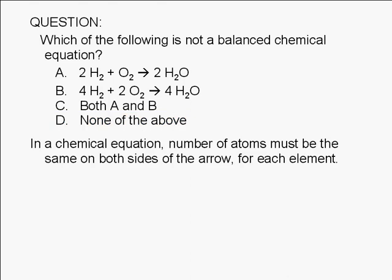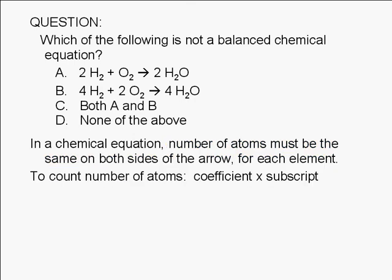In a chemical equation, the number of atoms must be the same on both sides of the arrow for each element. To count the number of atoms, we simply multiply the coefficient by the subscript.